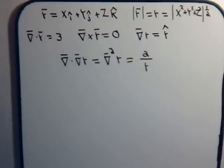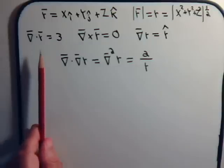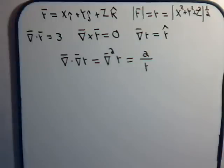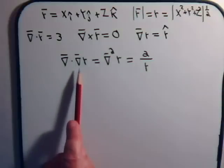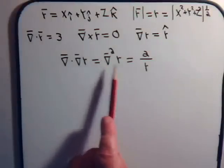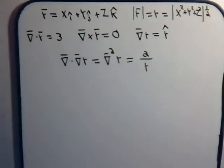The magnitude of the position vector is just going to be this expression. In the previous video we showed that the divergence of the position vector is equal to 3, the curl is 0, and if you take the gradient of the magnitude of any position vector, that gives you simply the unit position vector. Now in this video, we want to consider taking the divergence of the gradient of the magnitude of any position vector — that would be the Laplacian of |r| — and we're going to show that it's equal to 2 divided by the magnitude of the position vector.